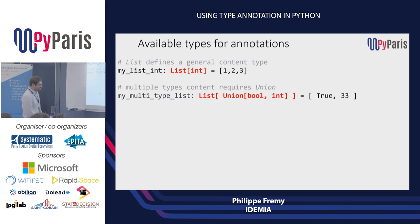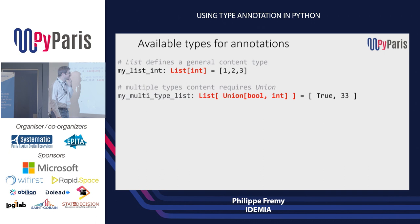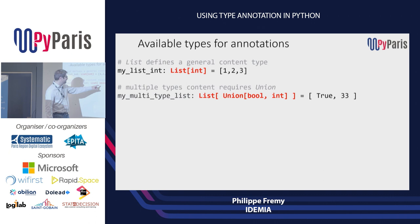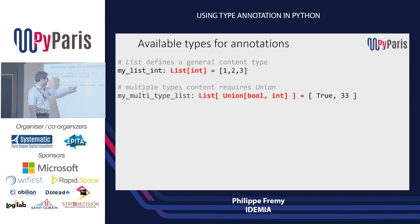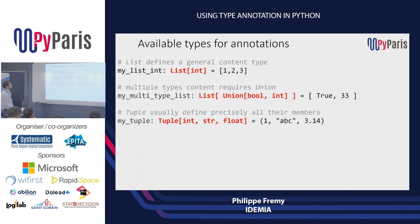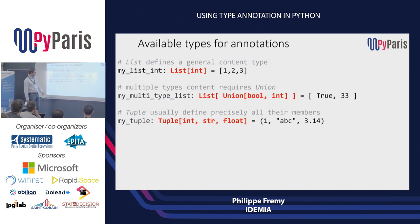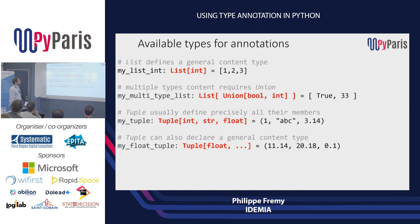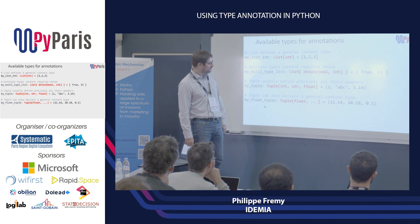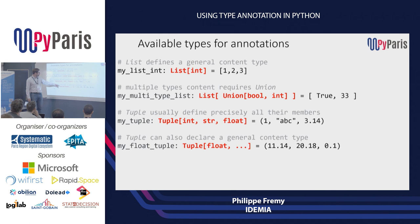If you want a list that contains different kinds of types, you need an extra keyword named 'union'. Using square brackets, you specify that the type can be either a boolean or an integer, and the list will contain this type. For a tuple, you typically define exactly what the tuple is going to be — for example, a tuple with three fields: first an integer, second a string, third a float. You can also declare a tuple with non-specific length but specific content using the three-dot syntax, which gives a tuple of floats of any length.